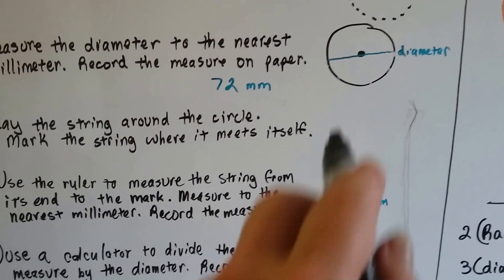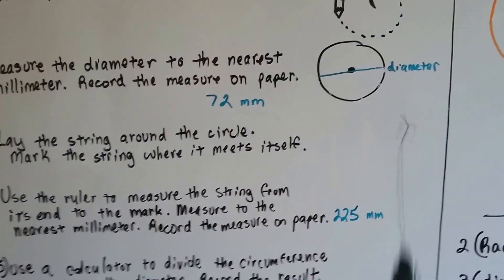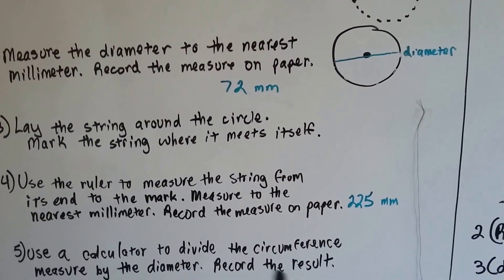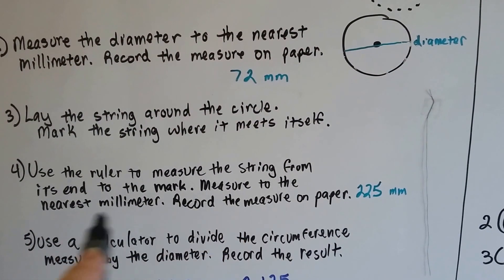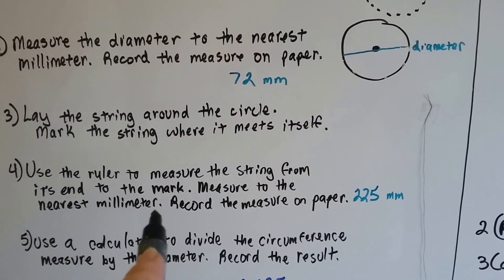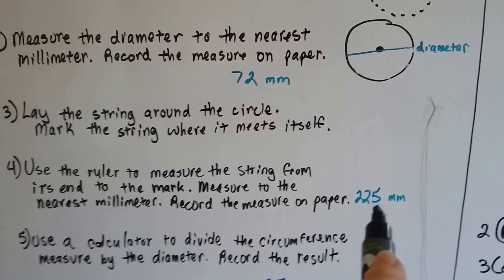And you can lay a string around the outside of the circle. I used this string and I laid it around the outside and then I measured the string on my metric ruler and I got 225 millimeters.